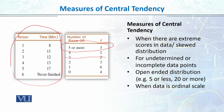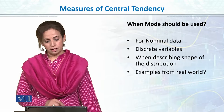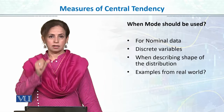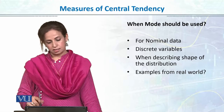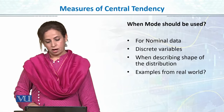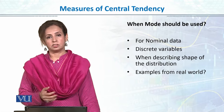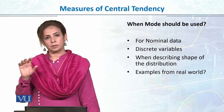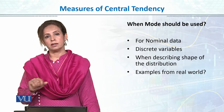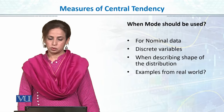Mode is used when we have nominal data and discrete variables which are in whole numbers, or when describing the shape of the distribution — we can identify the mode from the peak. In the real world, in the fashion industry, sales, purchases, and marketing, mode value is very helpful because we are dealing with categorical or nominal data, so mode is the preferred choice to find the center of the distribution.